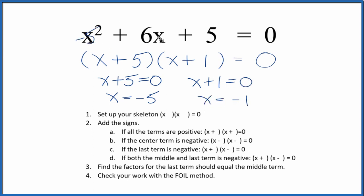If you put negative 5 in for x here, and you do the math, it'll equal 0. Likewise, if you put negative 1 in for x and do the math, it'll also equal 0. So these are the correct answers.